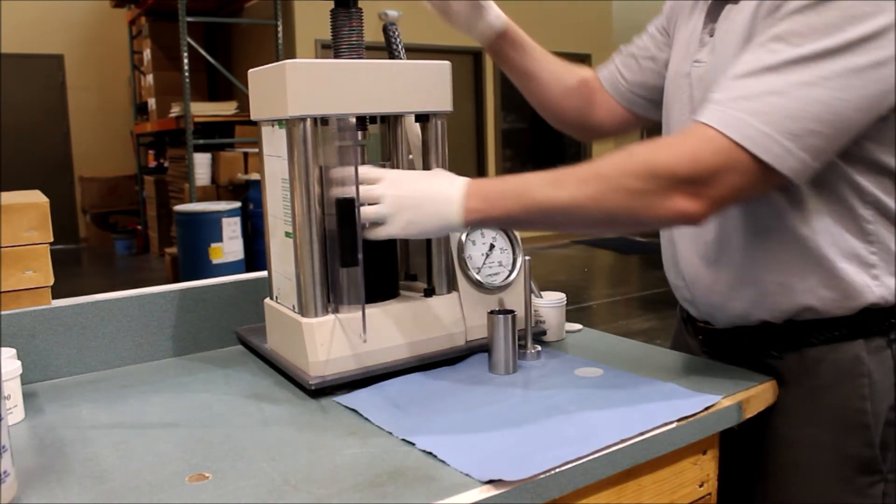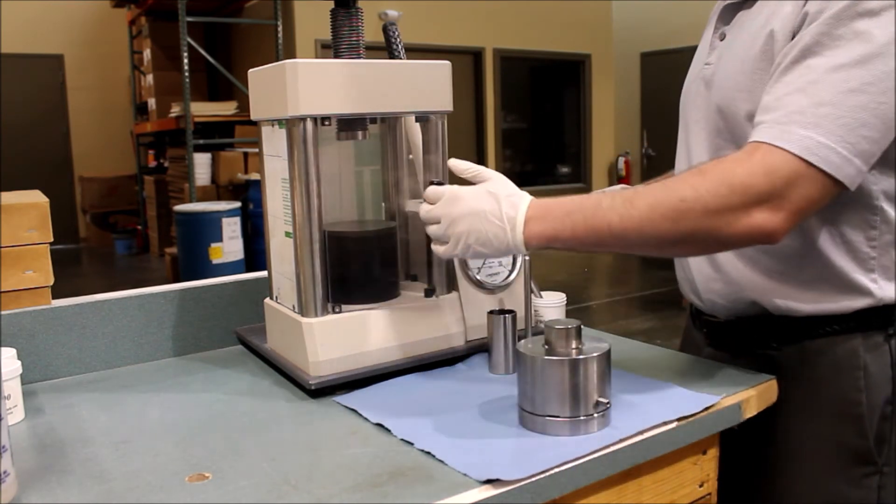From there, remove the die set and remove the plunger from the cylinder. This will make removal of the base easier.